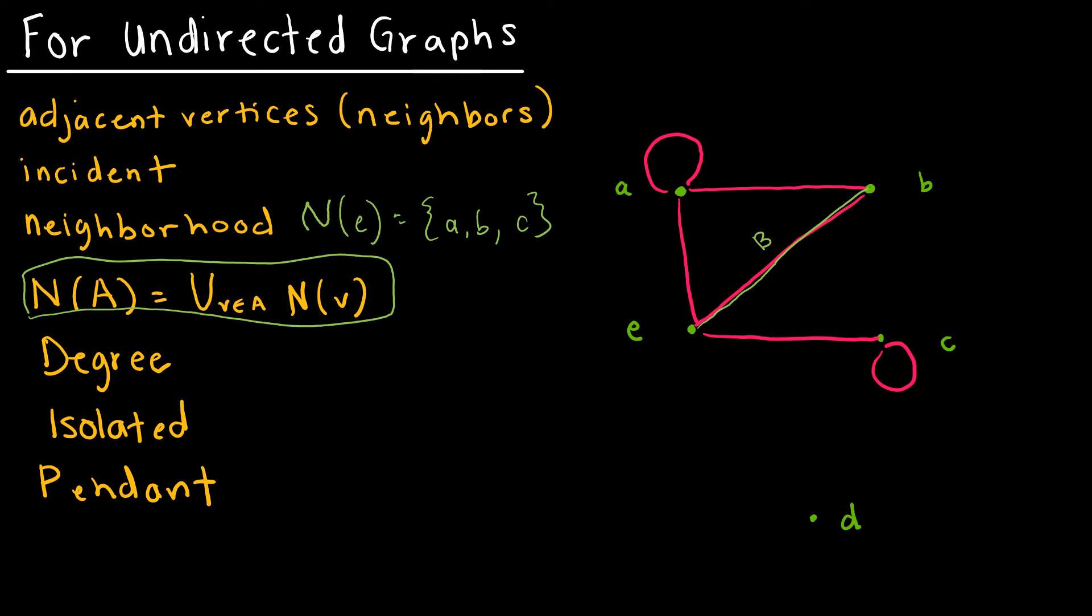That brings us to degree. The degree for an undirected graph is essentially the sum of the number of ins and outs, so the number of vertices connected to that particular vertices, so the number of edges connected to the vertices. So for A, notice we'd have 1, 2, 3, 4. So the degree of A would be 4. Even though that loop is just really a line connecting itself, we do have to count it twice.